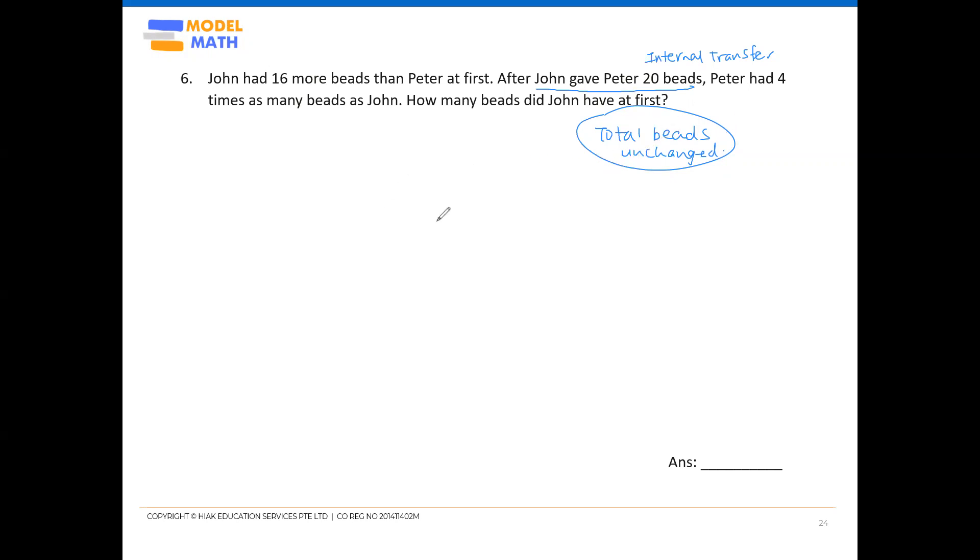So for this question, if you use the before change after method, it is not so helpful. So rather than doing that, we should use the model method instead. Because somewhere you have all this comparison with 16 more, and you have to work four times, which is another form of units comparison. So a model would be more applicable in this case.